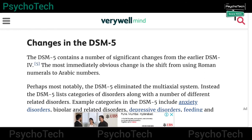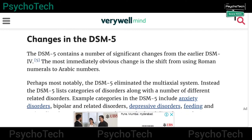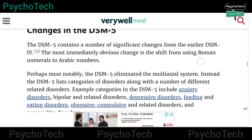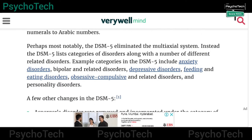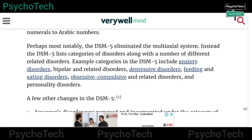The changes made in DSM-5 contain a number of significant differences from the earlier DSM-4. The most immediately obvious change is the shift from using Roman numerals to Arabic numbers. Most notably, DSM-5 eliminated the multi-axial system present in earlier versions. Instead, DSM-5 lists categories of disorders along with a number of different related disorders. Example categories include Anxiety Disorders.